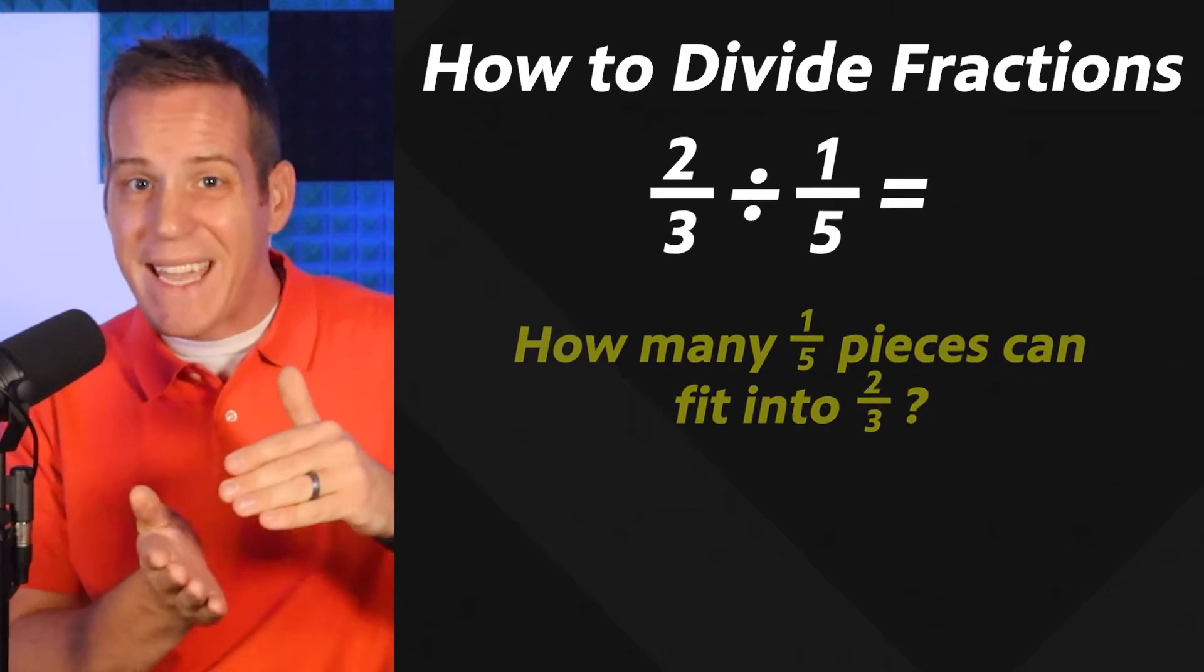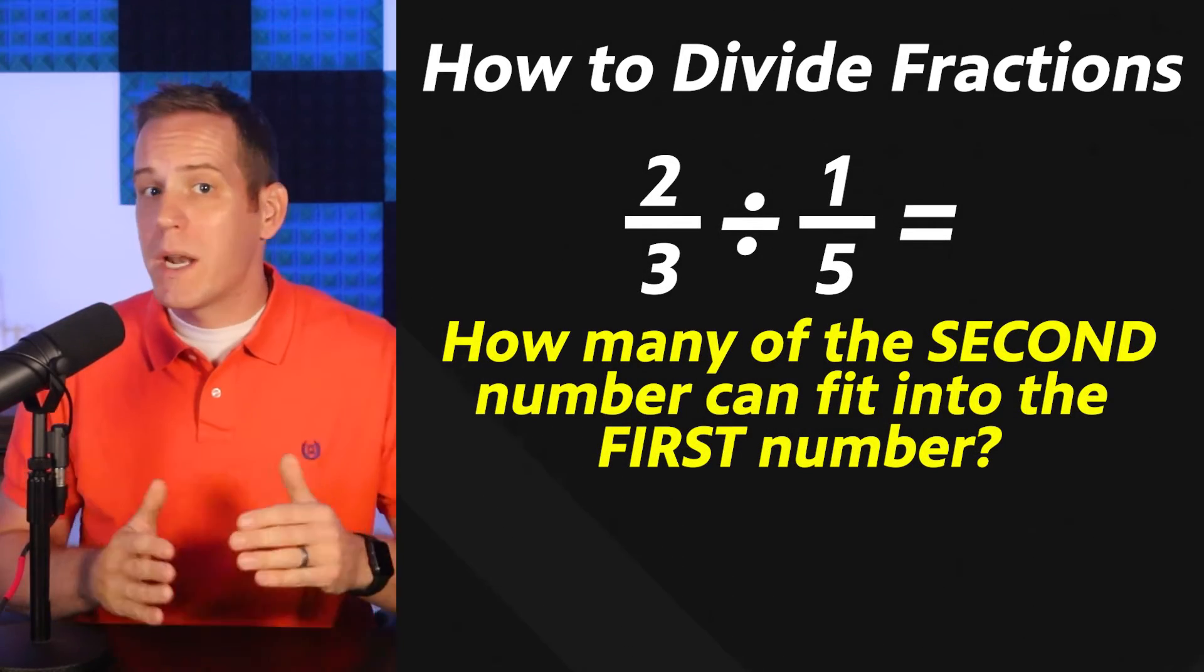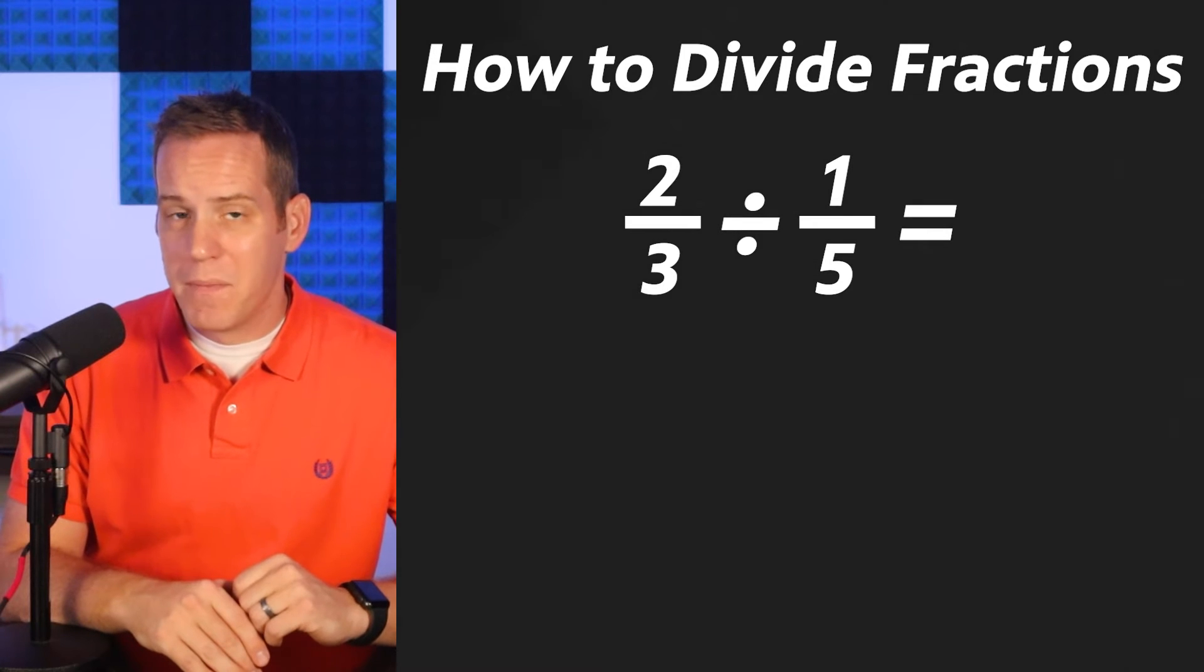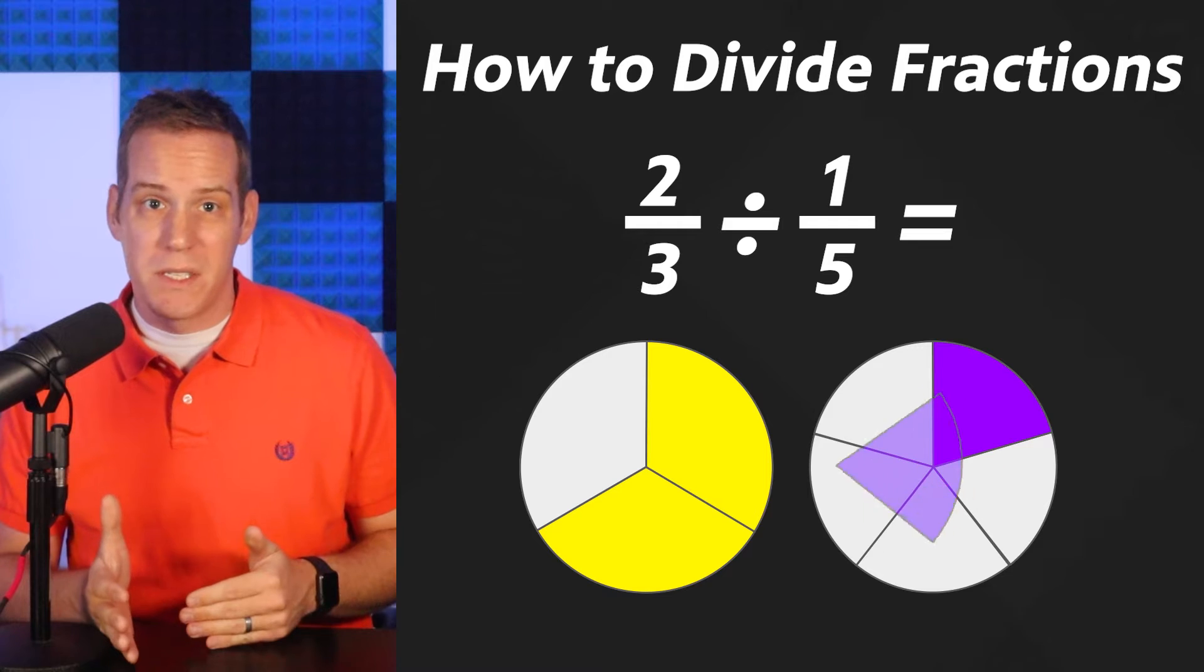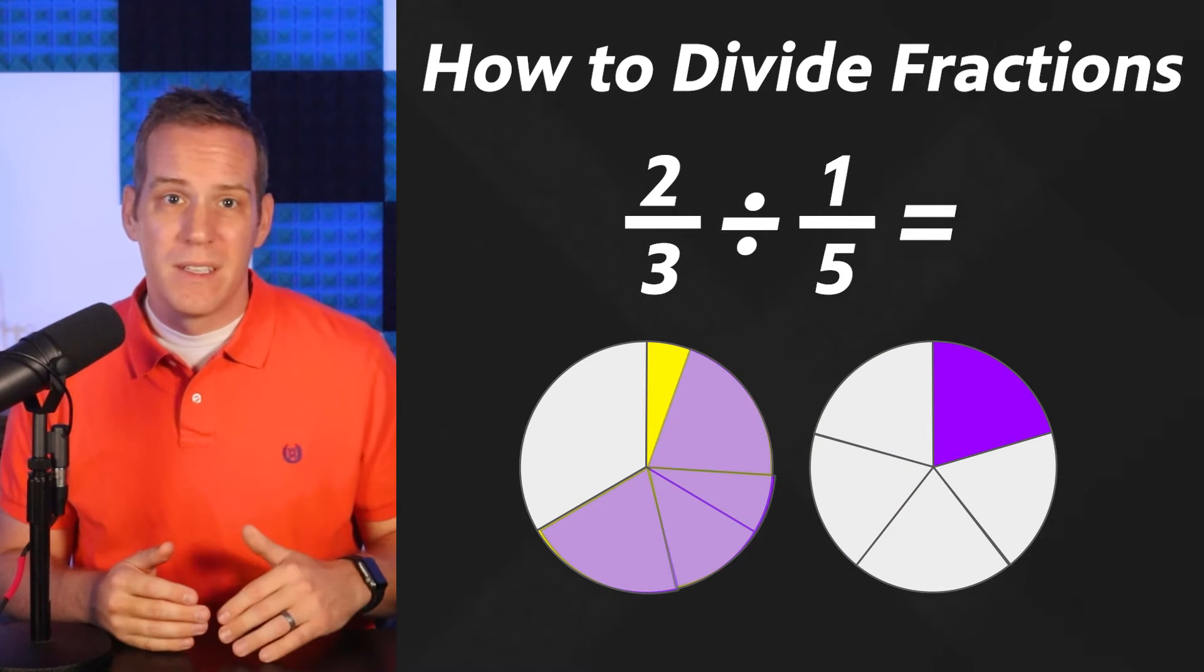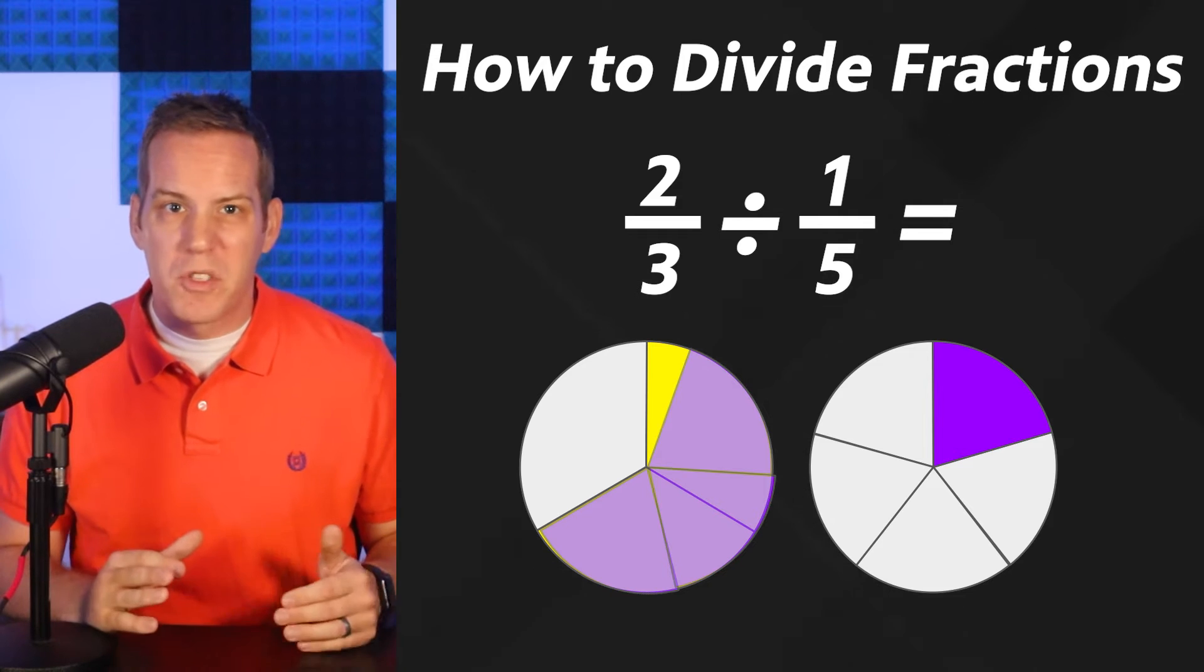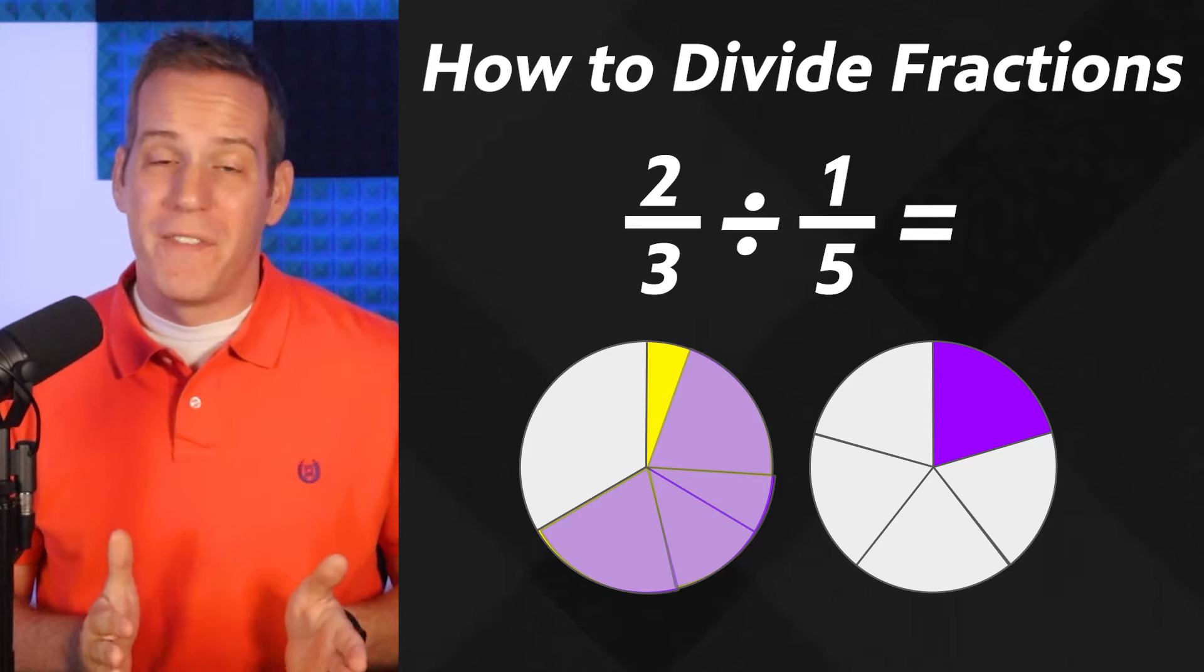We could try to model it with these shapes on the screen. How many one-fifth pieces fit into the two-third pieces? One, two, three, and then like a little extra, so three and something, right? Well, there's got to be a mathematical way to figure this out, right?